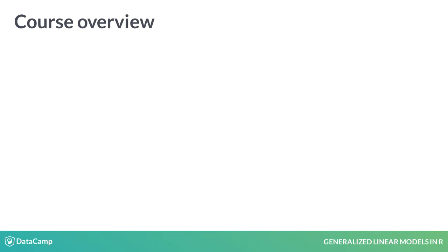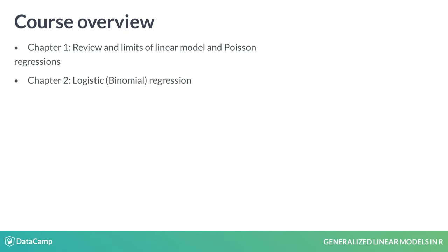In Chapter 1, you'll see a review of linear models, learn about their limitations, and see how GLMs overcome some of these limitations. You'll also learn about Poisson regression, a type of GLM. In Chapter 2, you'll learn how to run binomial regressions. In Chapter 3, you'll learn about interpreting and plotting GLMs. In Chapter 4, you'll learn how to do multiple regressions with GLMs.